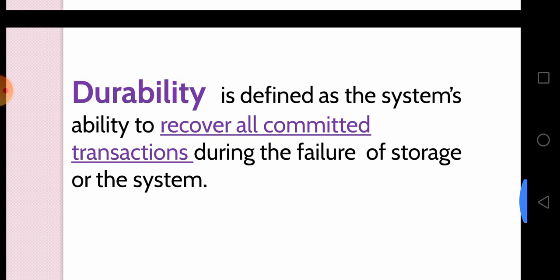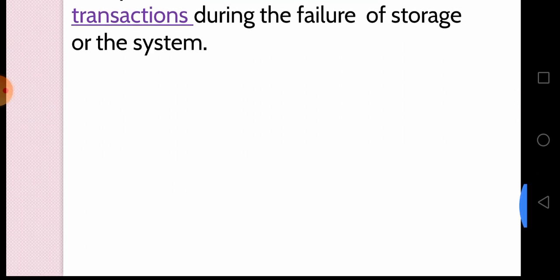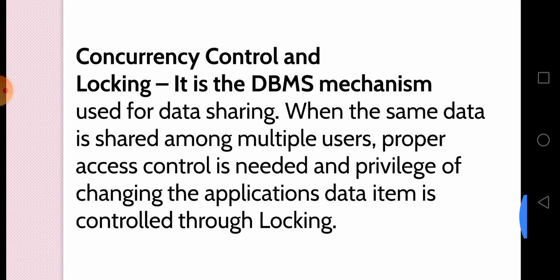Durability is the last ACID property. It is defined as the system's ability to recover all committed transactions during failure or storage issues of the system. Next, concurrency control locking is a DBMS mechanism mainly used for sharing. When the same data is accessed among multiple users, proper access control is needed; privilege changes to application data items are controlled through locking. Concurrency control locking is very useful in the DBMS mechanism.